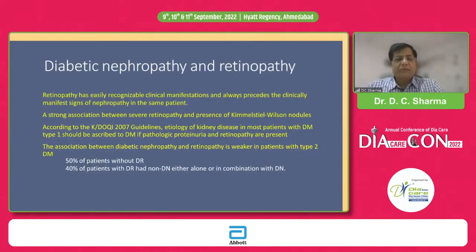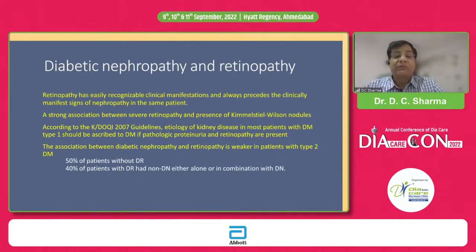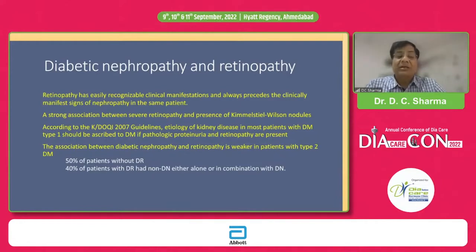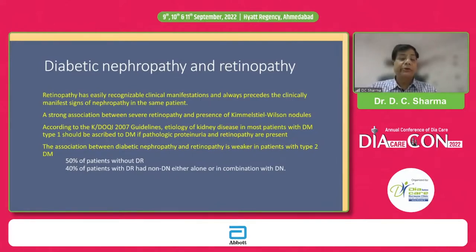There is a very interesting association between diabetic nephropathy and retinopathy. Retinopathy has easily recognizable clinical manifestations and almost always precedes clinically manifest nephropathy in a given patient. There is a strong association between severe retinopathy and the presence of Kimmelstiel-Wilson lesions. According to guidelines, the etiology of kidney disease in most type 1 diabetic patients should be ascribed to diabetes if there is pathological proteinuria and retinopathy. Conversely, if there is no retinopathy and no proteinuria yet kidney disease is present, one should consider non-diabetic kidney disease.